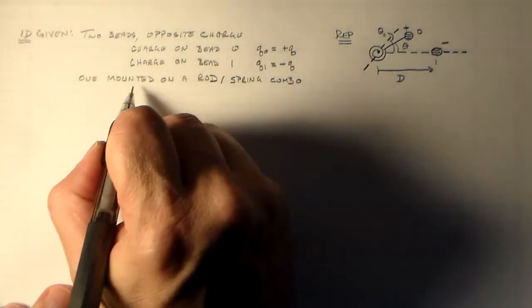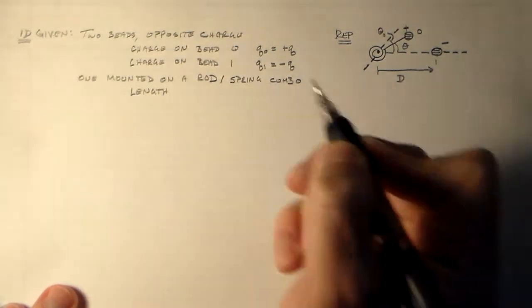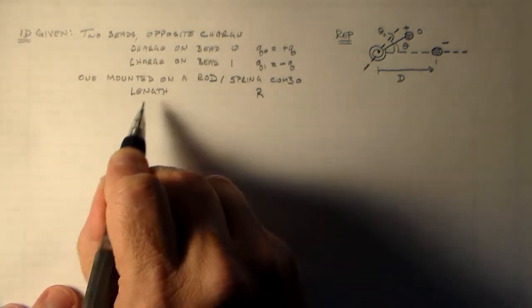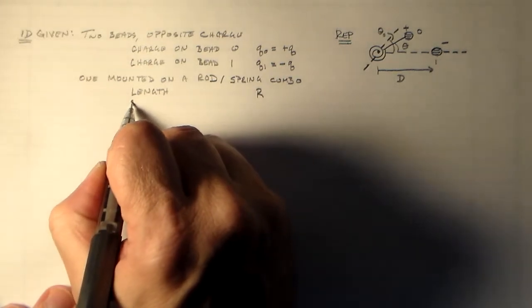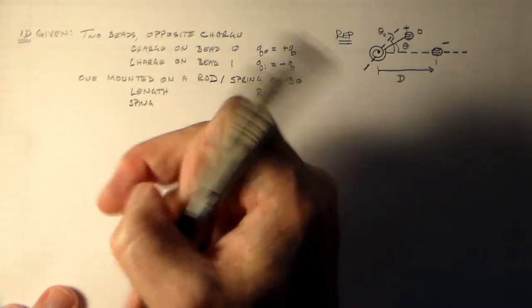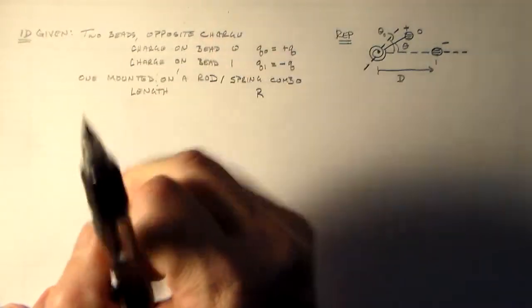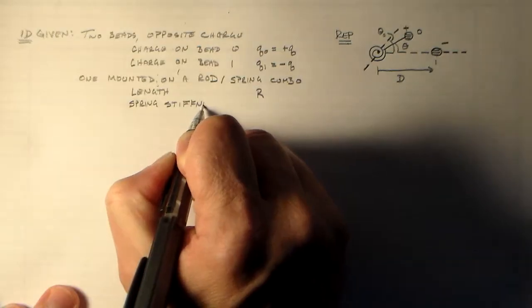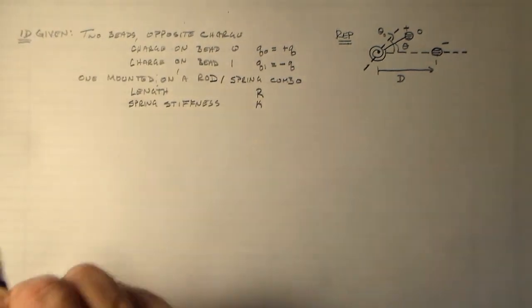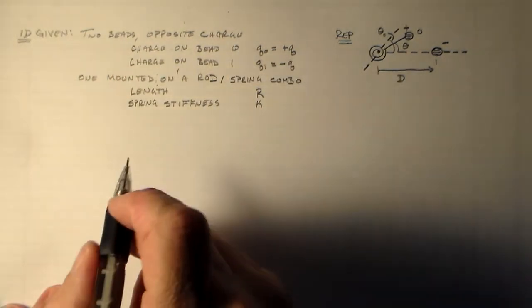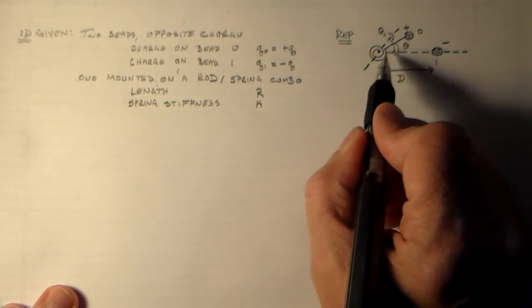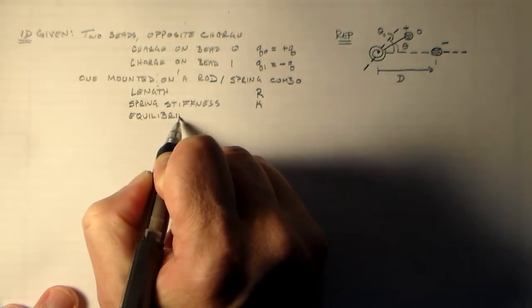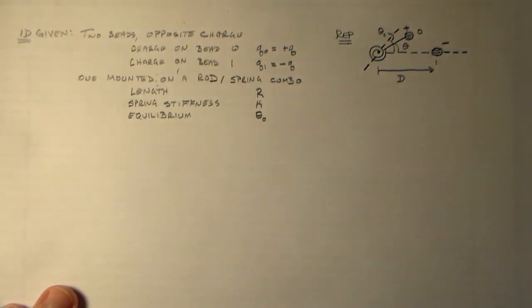So the rod has a length for the rod, probably I'm going to call it R. This has a spring stiffness, to distinguish it a little bit from the k that we'd use if it was a normal spring. Next we've got an equilibrium orientation, and we'll just call that theta zero.